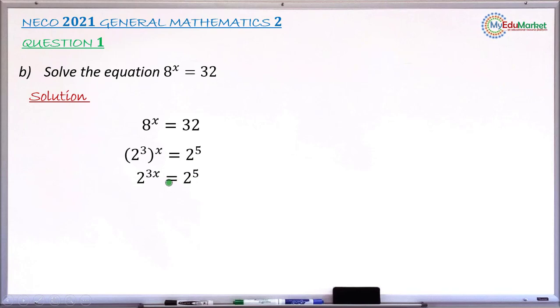So you now have two indexed numbers that are equal, and their bases are equal to 2 each. So definitely the powers must be equal. Therefore, you now have the power of this indexed number, which is 3x, equals the power of the second indexed number, which is 5. This reduces your equation to a simple linear equation.